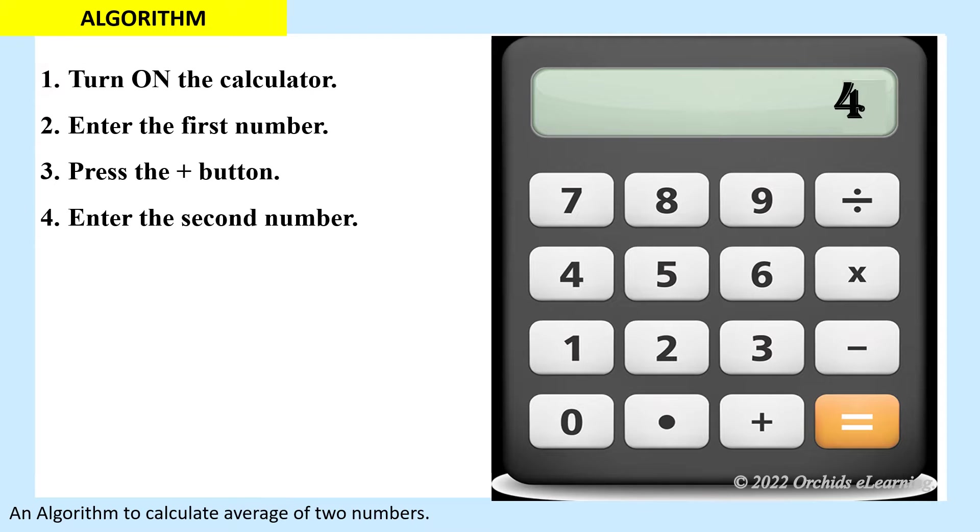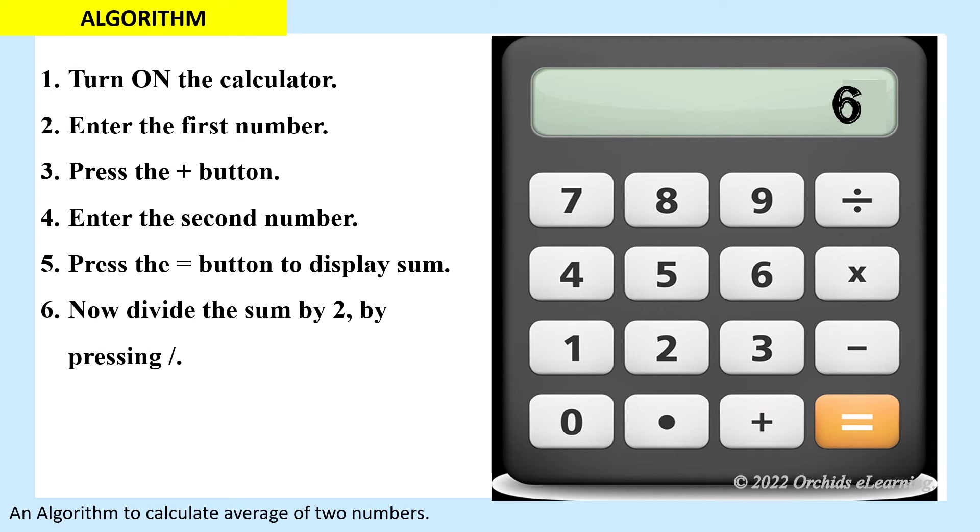Enter the second number. Press the equals button to display sum. Now divide the sum by 2 by pressing backslash or divide button. Press the equals button to see the average.